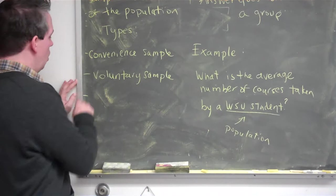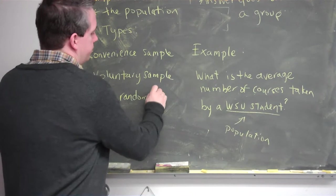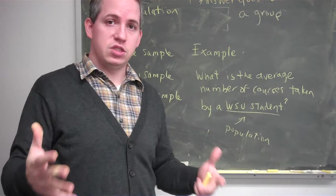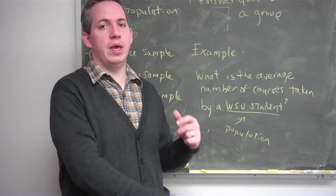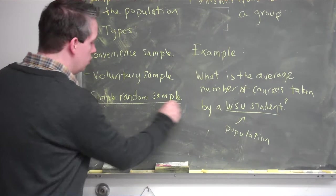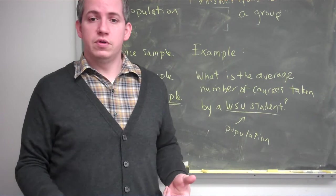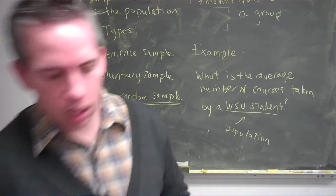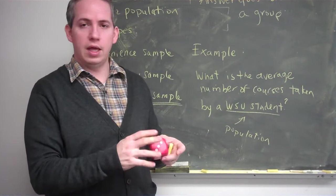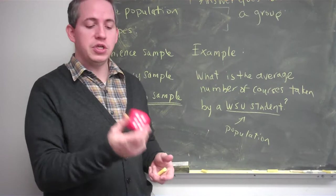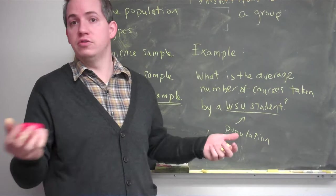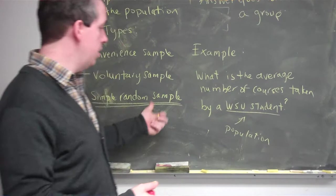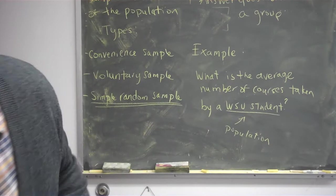We could also do a simple random sample. A simple random sample means I actually get a list of all Wayne State University students — it's almost like I write them down and throw them into a gigantic hat, and pick out about a thousand of them. This one is pretty good — if I'm randomly selecting, anyone who is a Wayne State student has the same chance of being chosen. Like randomly rolling a die, by randomly selecting people from the student list and asking how many courses they're taking, odds are I'll get a pretty good sense of what the real population is doing.